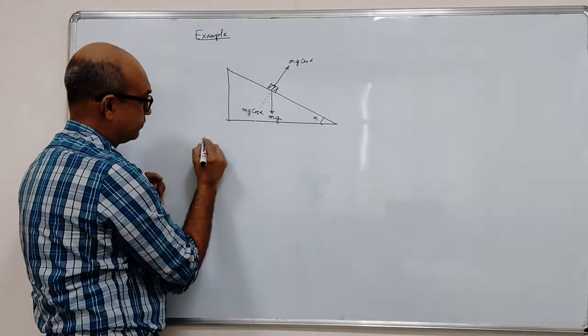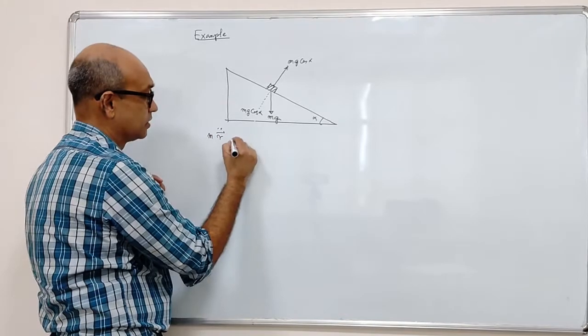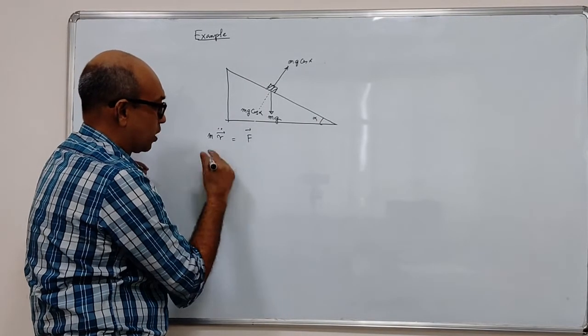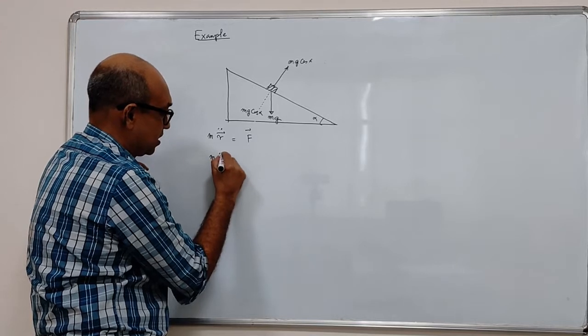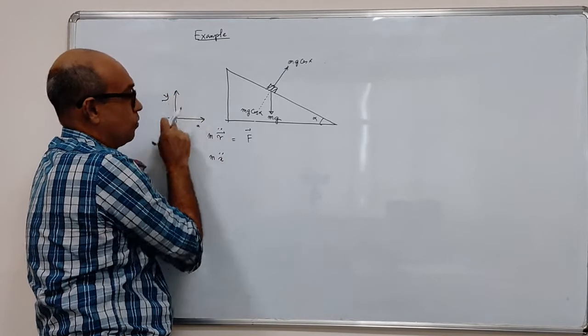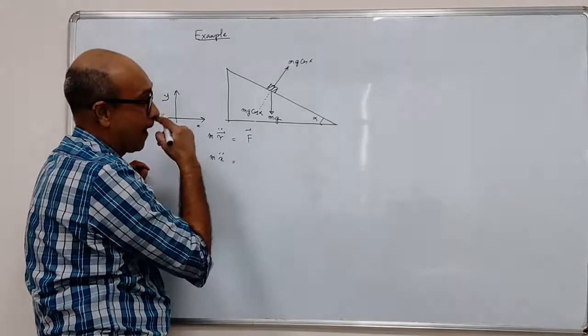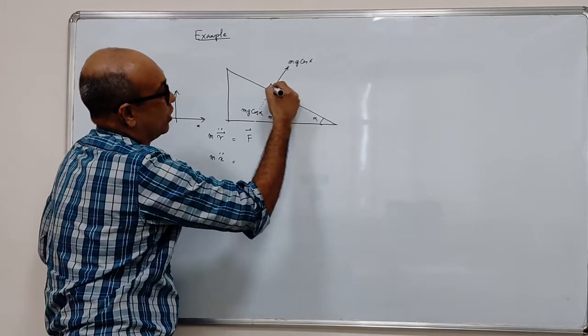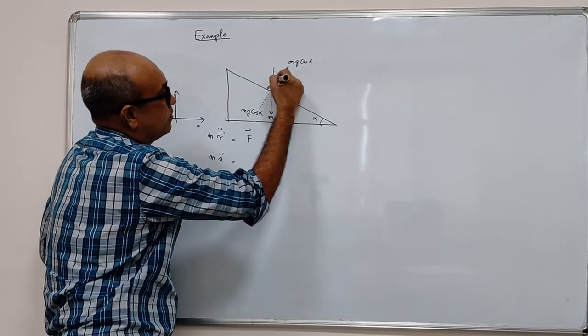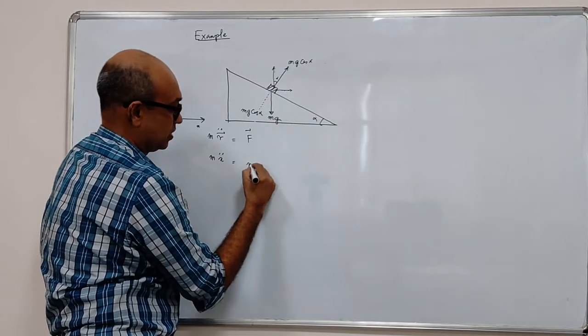And then, let's write down the equation of motion. We start with mass times acceleration is equal to the total force. And we can write it component-wise. The mass times acceleration along x. Let's say this is x and this is y. So, along x, what is the horizontal force? First of all, we know this is the reaction force. So, it must have a horizontal component. And that component would be mg cosine alpha times sine alpha. So, it's easy to write.